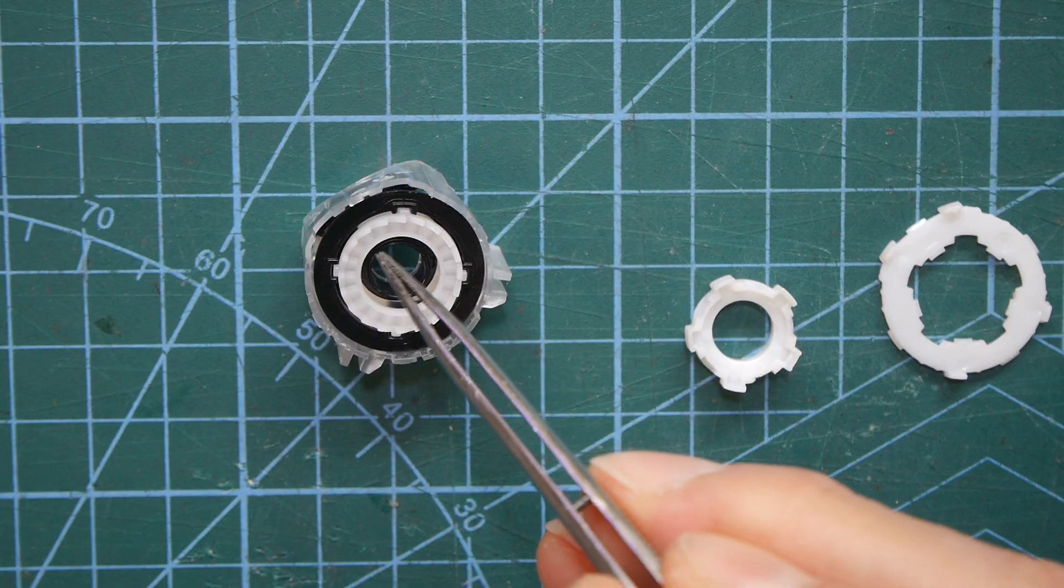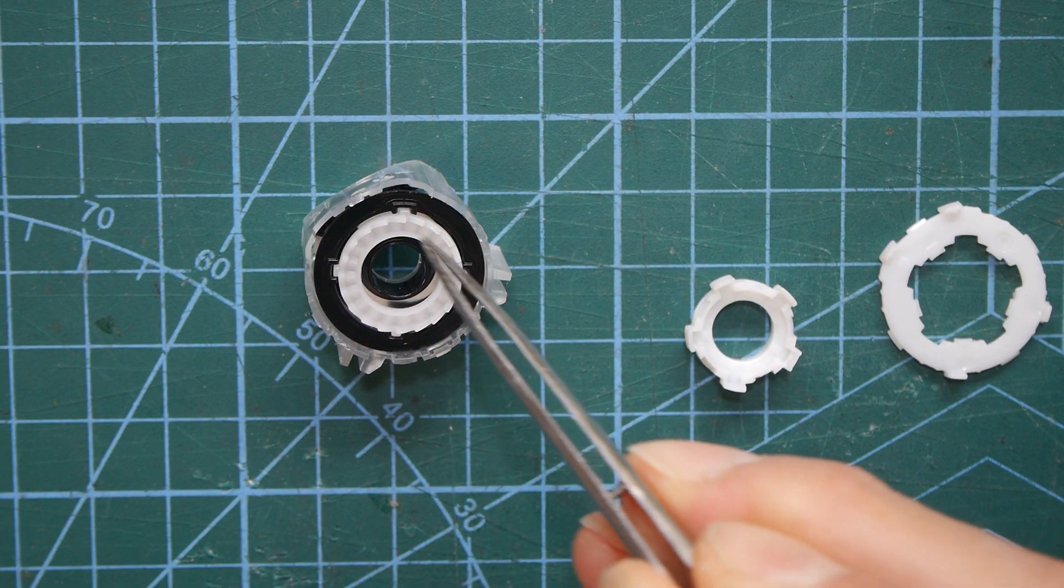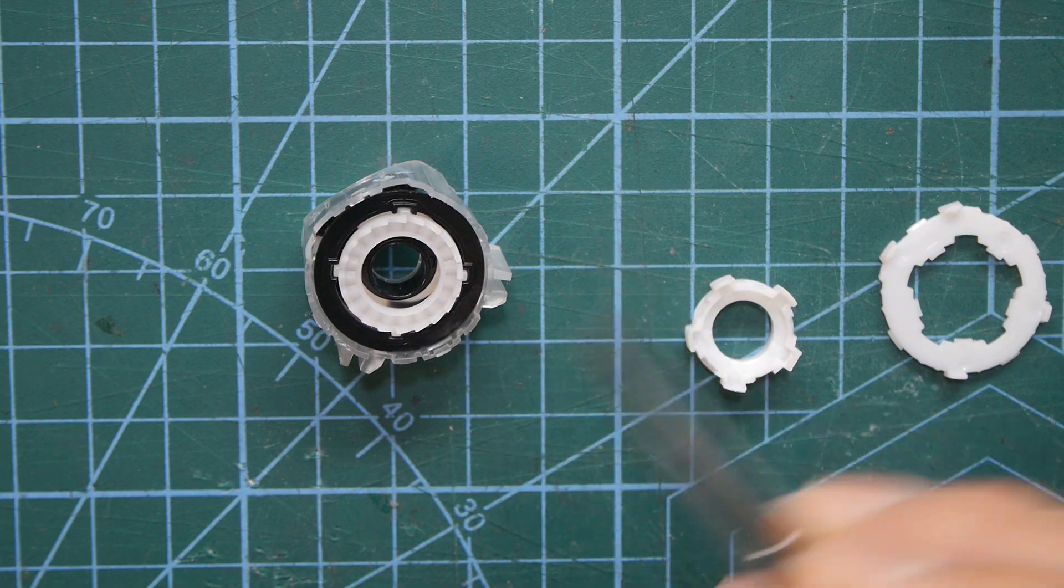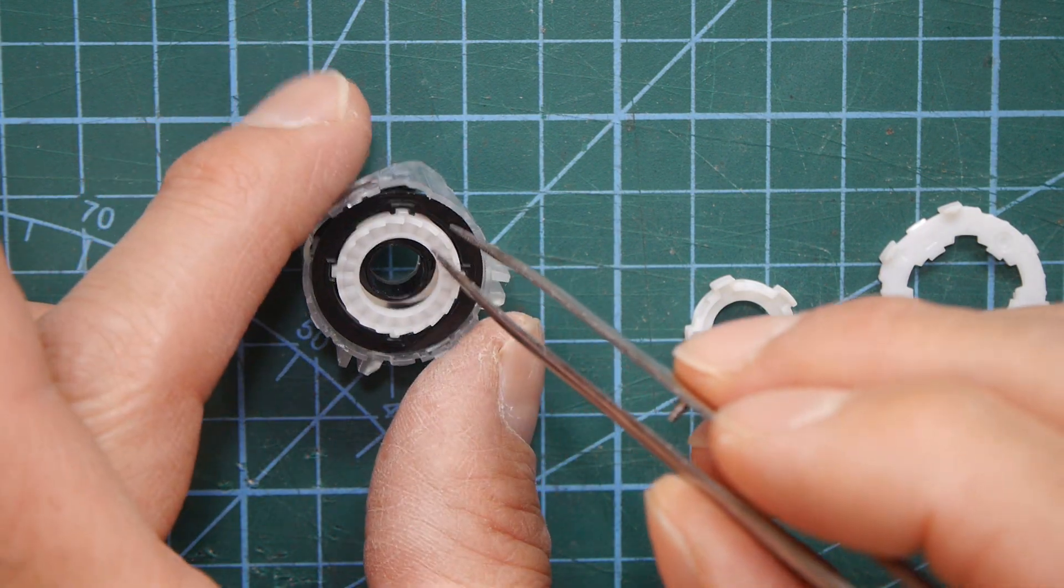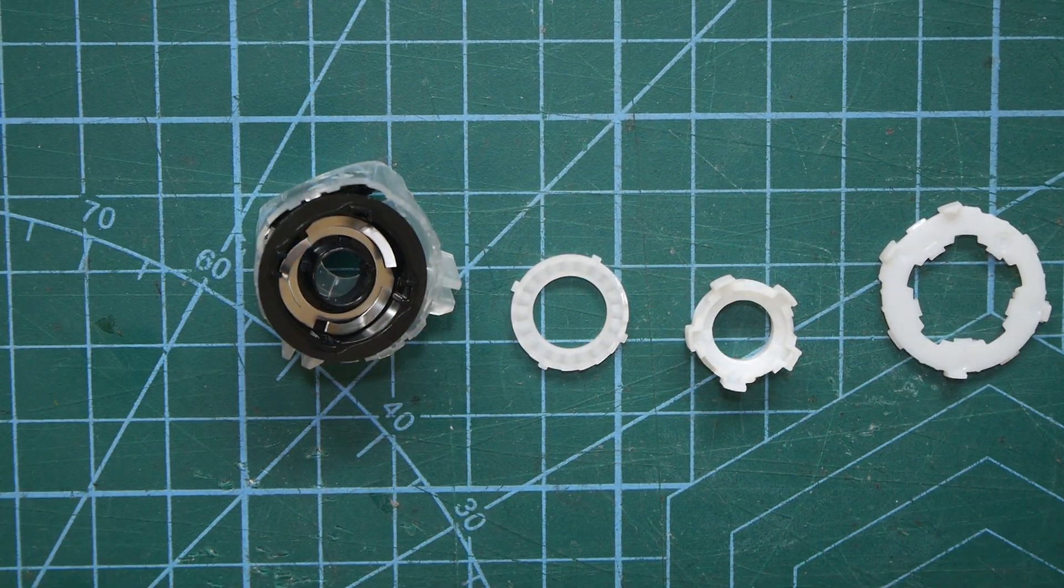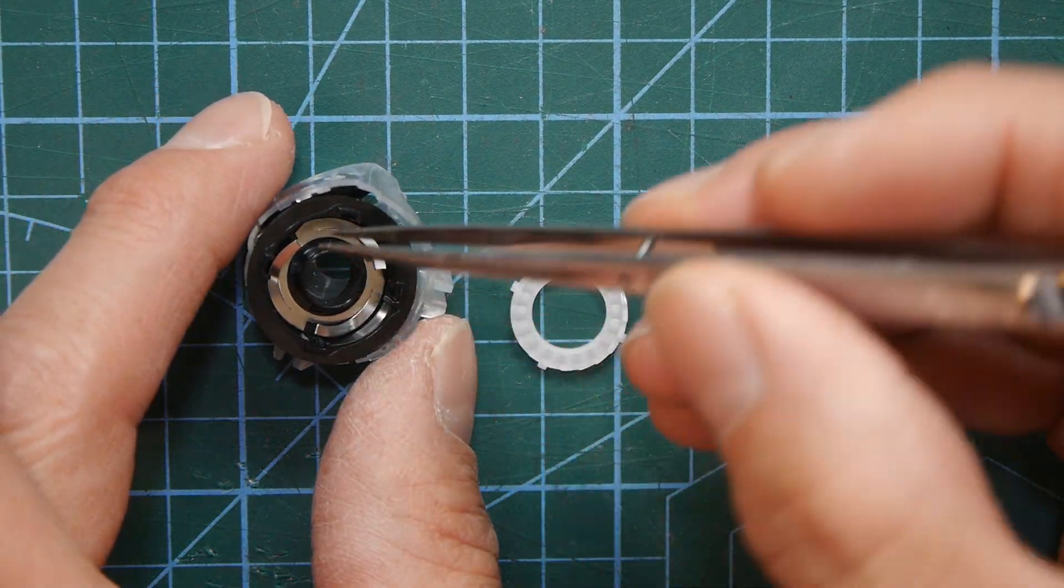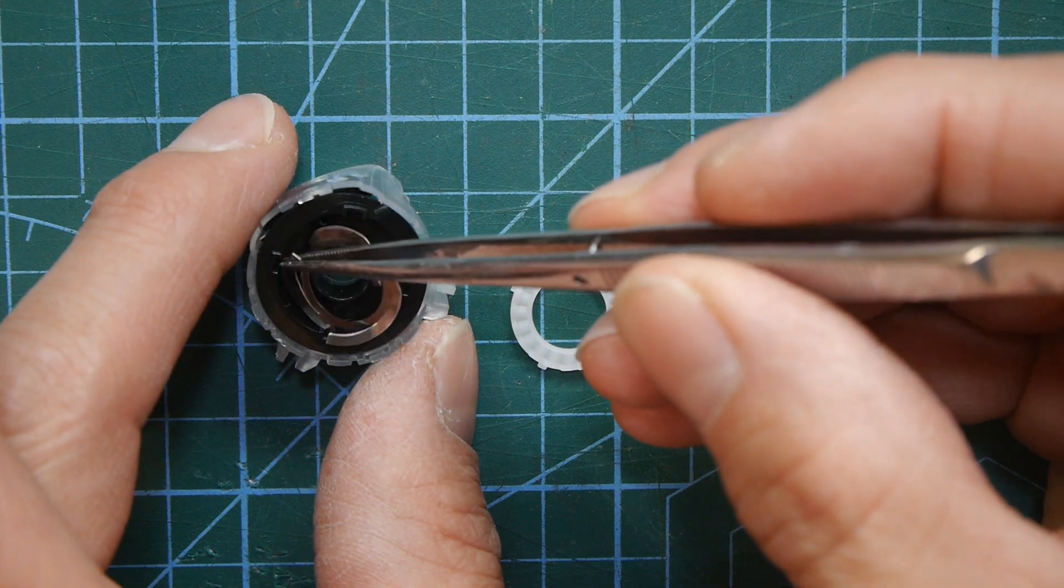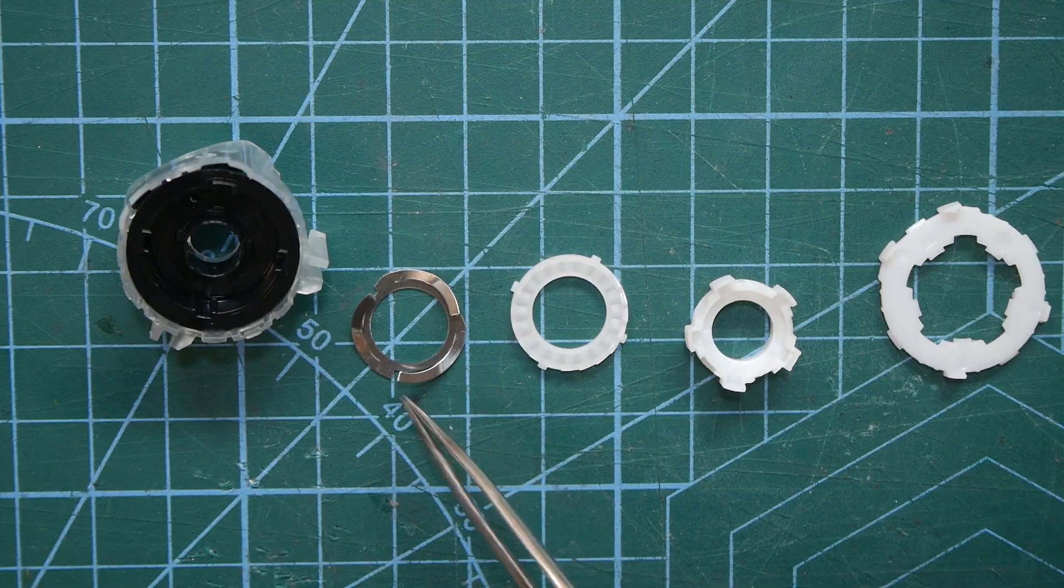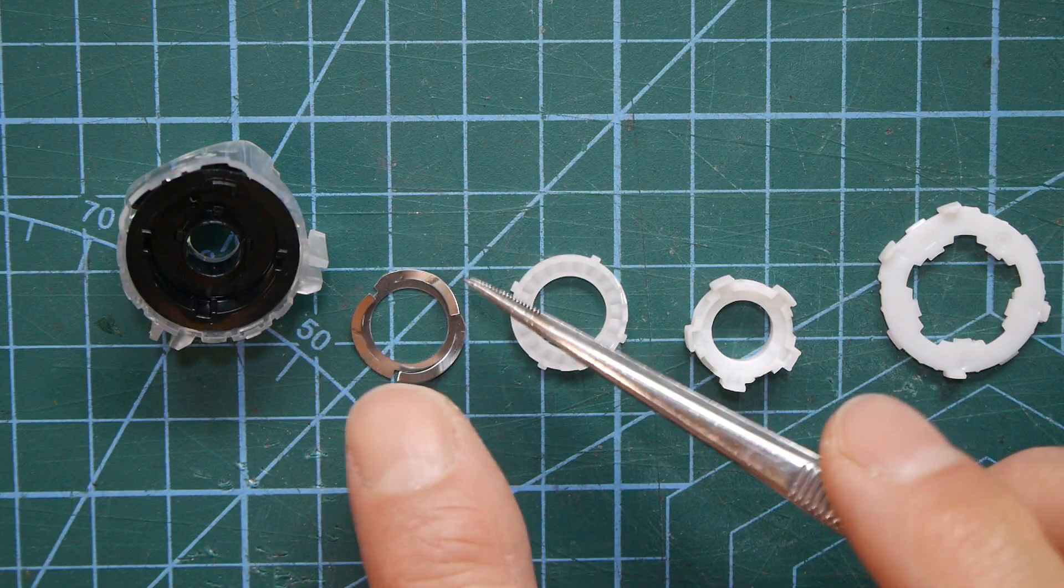And then if you look closely there's a really interesting little gear sort of ratchet system here and that's the bit that helps the counter itself rotate. So we'll take that out and then underneath that there's a spring.